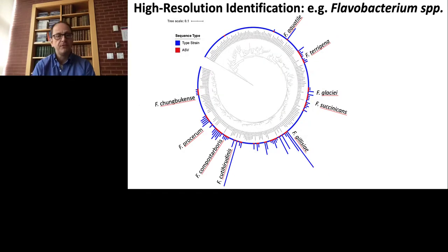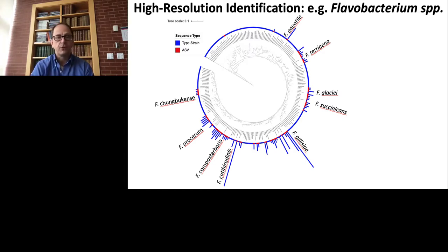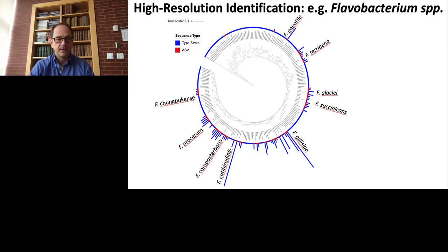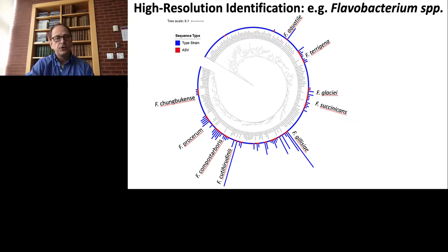We did something similar for flavobacteria. In the phylogenetic tree of the flavobacteria, the blue lines show how many isolates — ASVs — are related to the species shown, for example Flavobacterium aquatile, which was also able to inhibit the growth of some bacteria. Using this PacBio full-length 16S rRNA-based sequencing approach, we were able to identify a very large number of bacteria quickly and get a real good insight into the composition of the microbial communities.